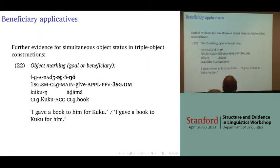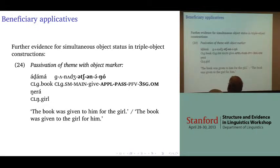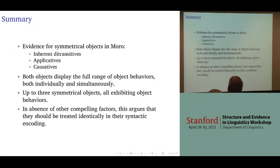Further evidence for simultaneous object status in triple object constructions comes from various combinations of object markers and passivization. The evidence for symmetrical objects in Moro comes from inherent ditransitives, applicatives,